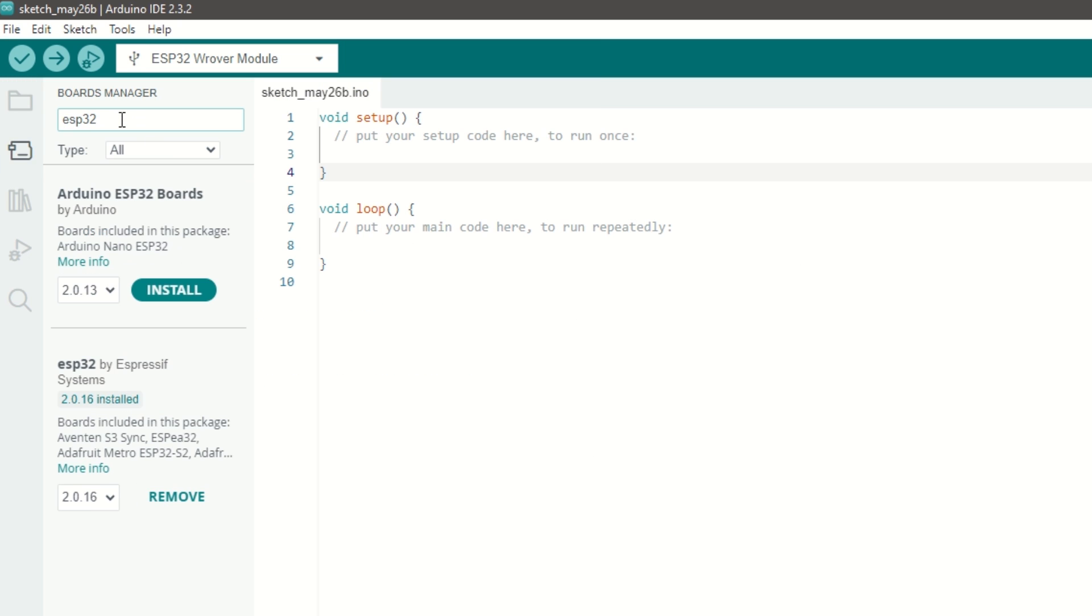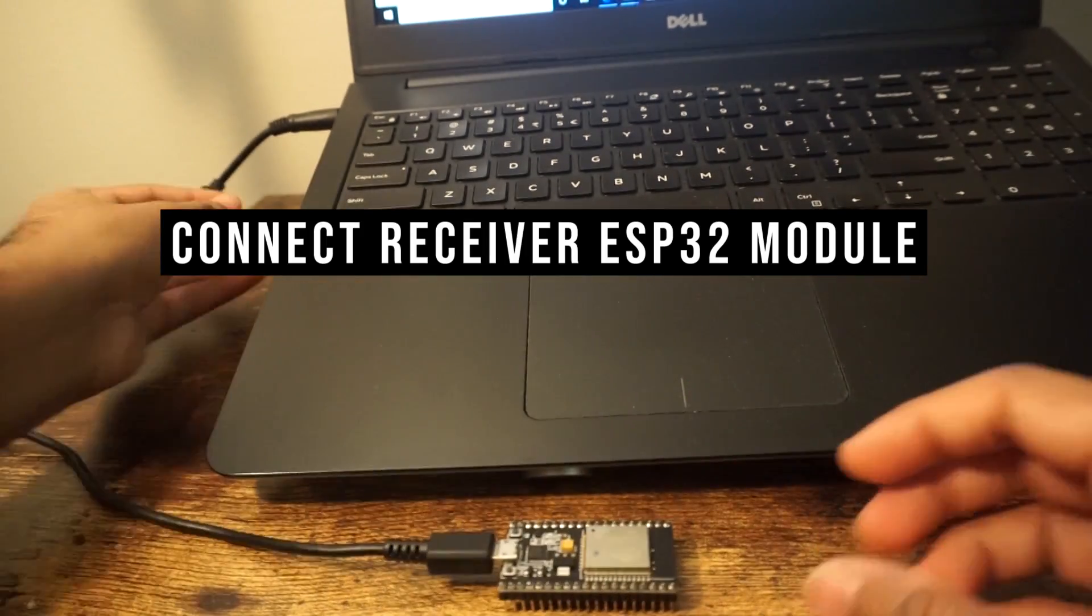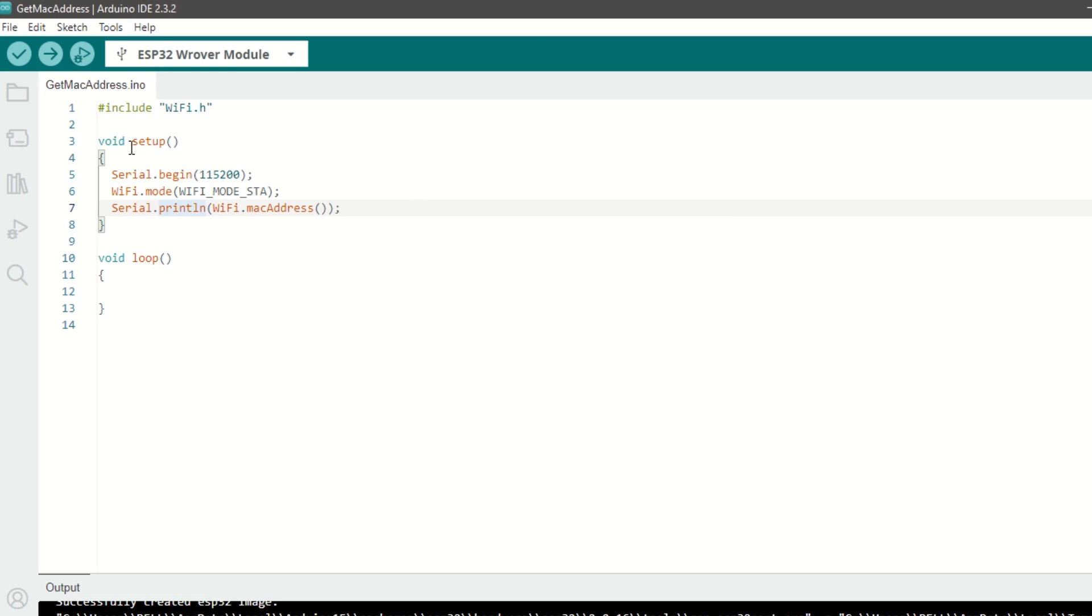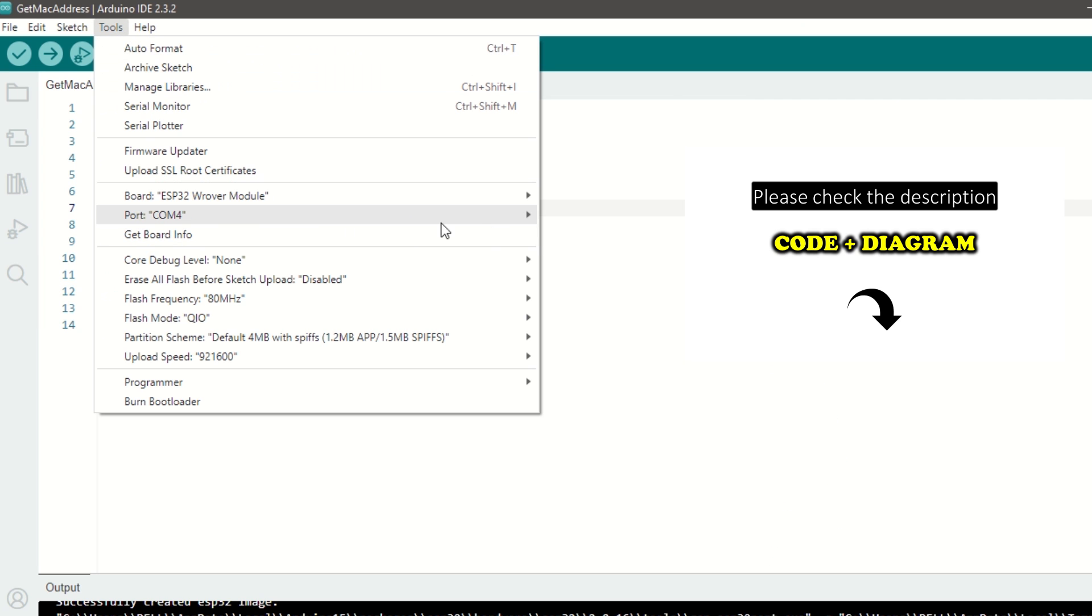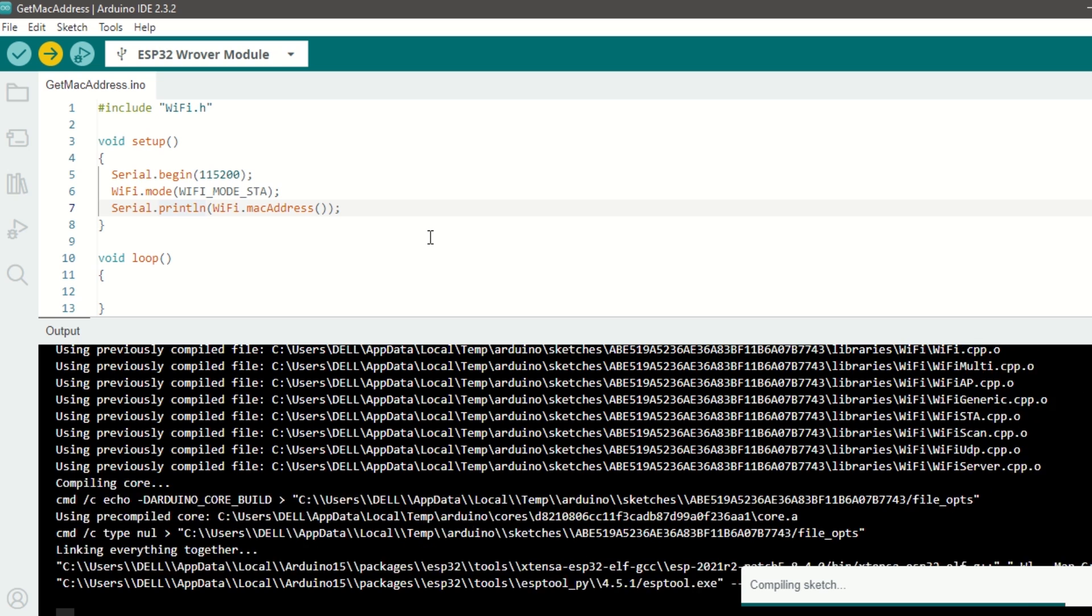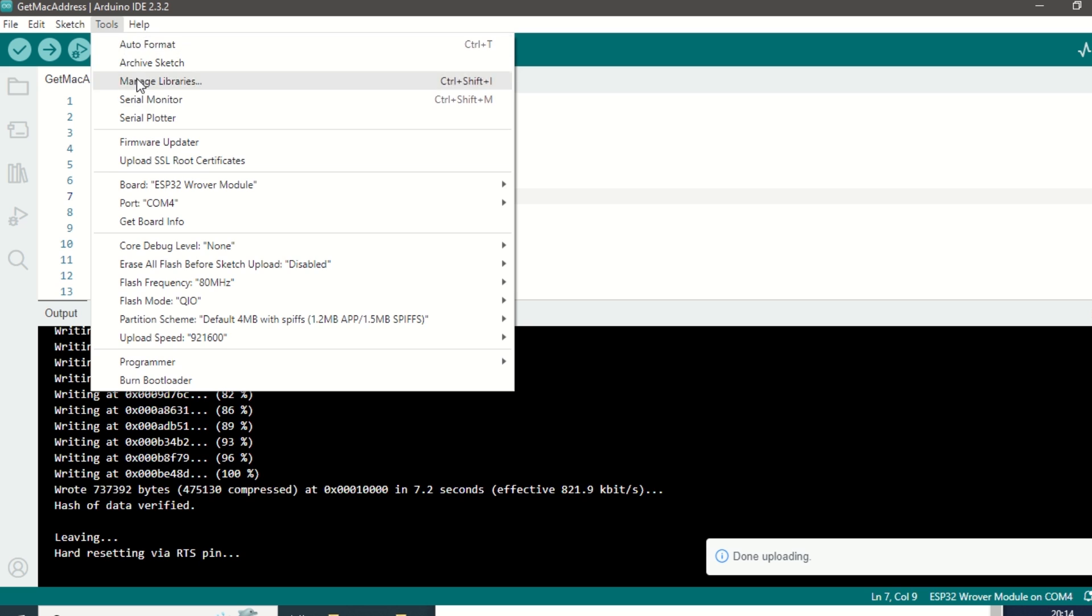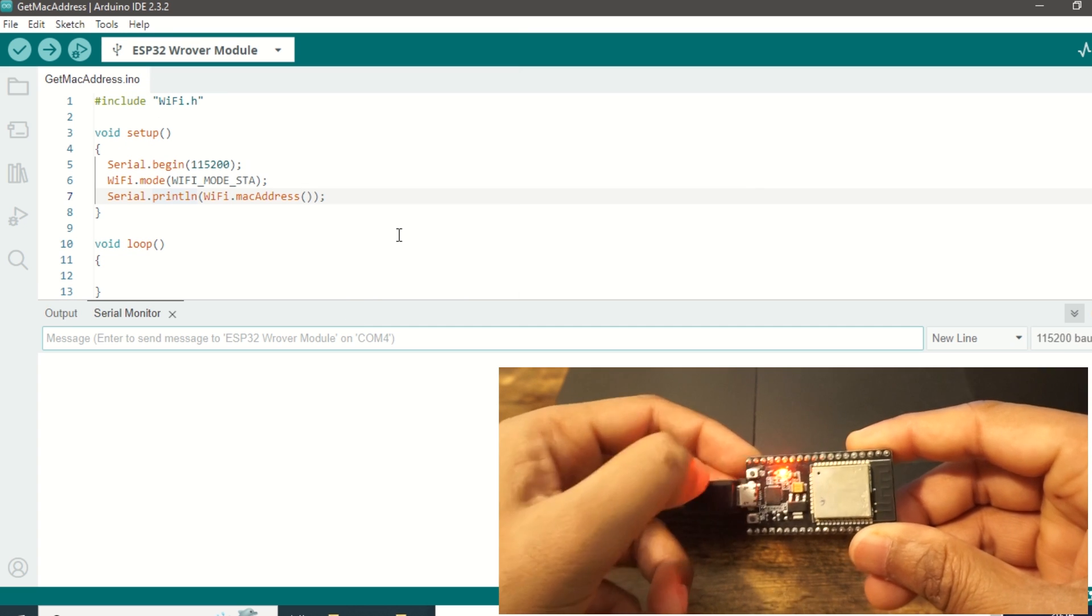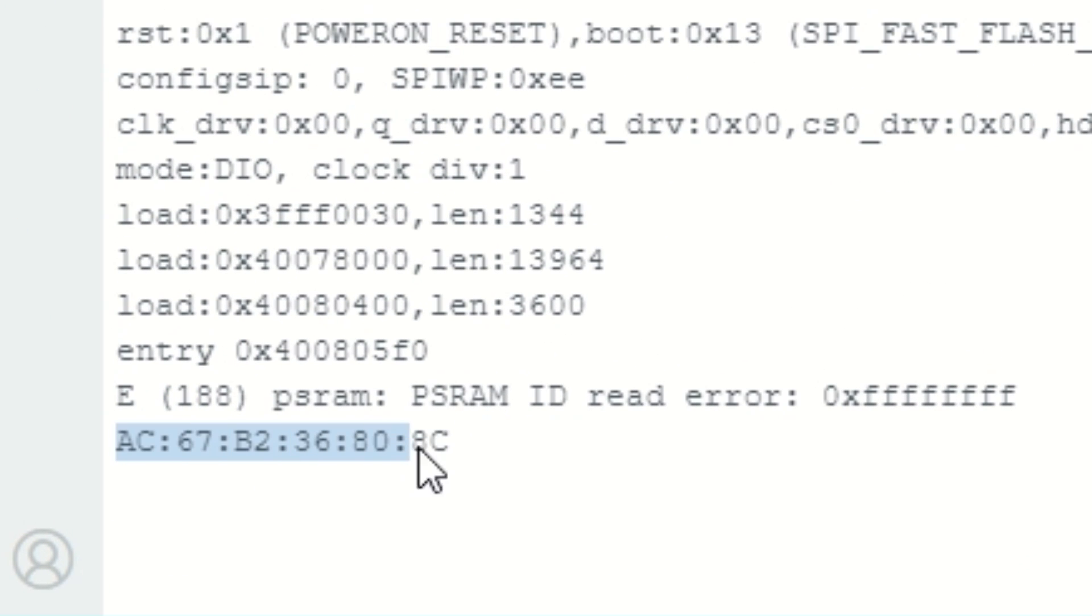Search for ESP32 and install it. Now connect receiver ESP32 board to laptop and upload this get mac address code. Select ESP32 Dev module and port. Hit upload. Once uploaded, open serial monitor and press enable button on ESP32 module. You can see that the mac address is printed. Note this down because we will need it in the transmitter code.